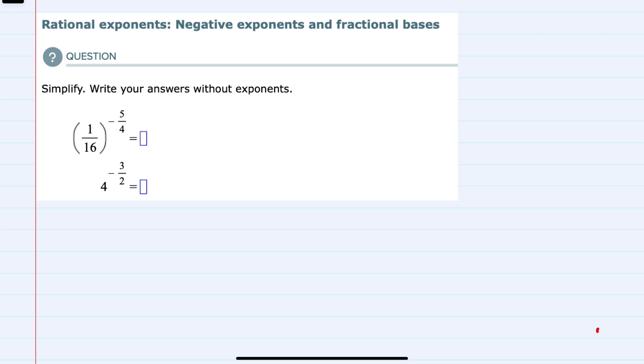I would like to get rid of these negative exponents. To do so, we can recall that if we have a fraction being raised to a negative exponent, we can make that exponent positive by taking the reciprocal of the fraction, which just means flipping it—moving the bottom to the top and the top to the bottom.